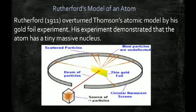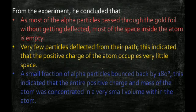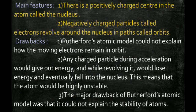Some alpha particles were scattered at small angles, and very few — approximately one in a thousand — rebounded back. From these observations Rutherford concluded: most of the space inside an atom is empty; a few deflections indicate a small region of positive charge (since positive repels positive); and the rebounding back indicates that the positive charge is concentrated at the center — this positive charge center is called the nucleus. The nucleus was thus discovered by Rutherford.